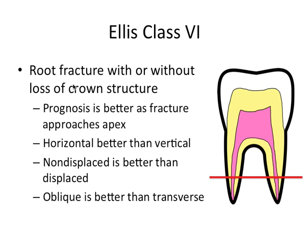Ellis class 6 refers to any root fracture, which may or may not involve loss of crown structure. Prognosis is better as the fracture approaches the apex — so a fracture in the apical third of the root is better than one near the bifurcation. A horizontal root fracture has a much better prognosis than a vertical root fracture, which almost always requires extraction. A non-displaced tooth is a better sign than a displaced one, and an oblique root fracture is generally better than a transverse root fracture.